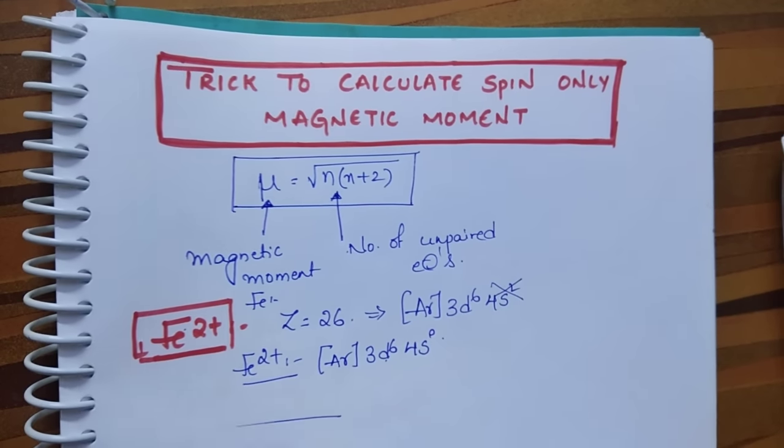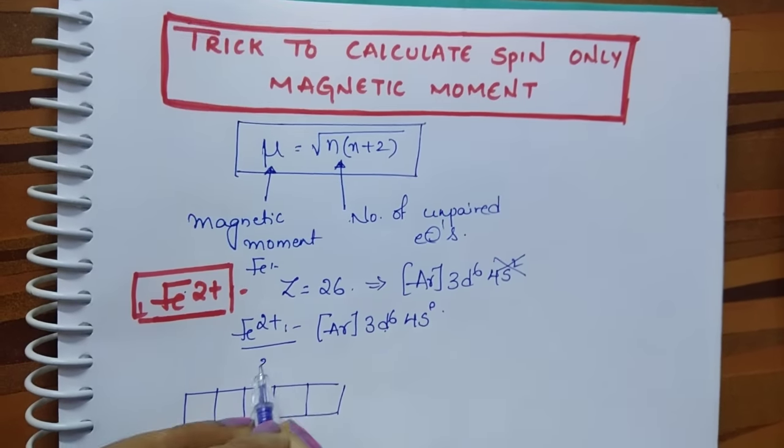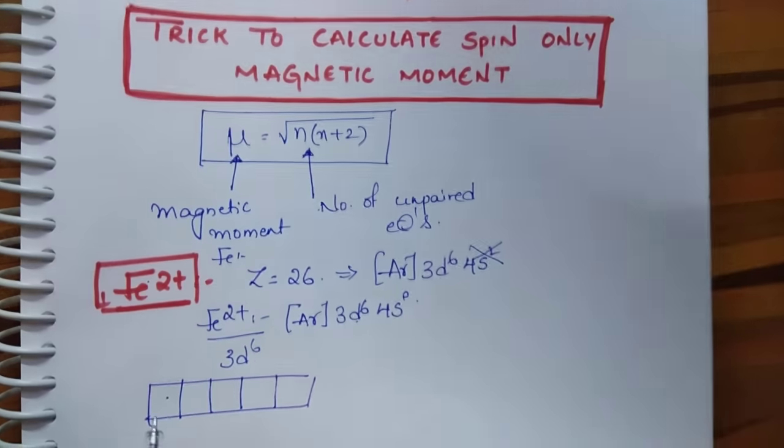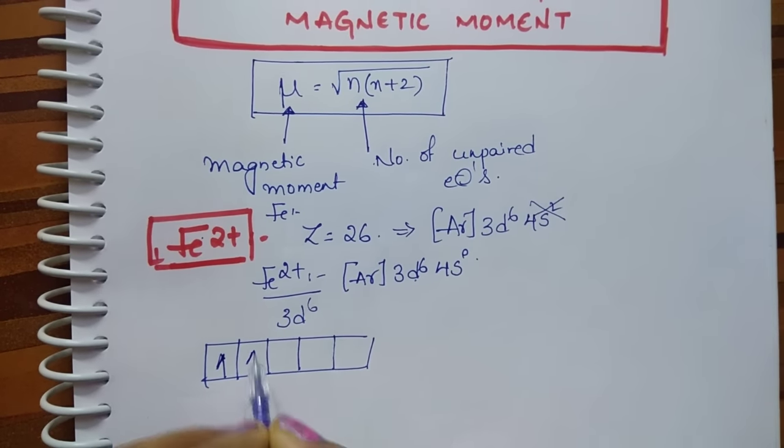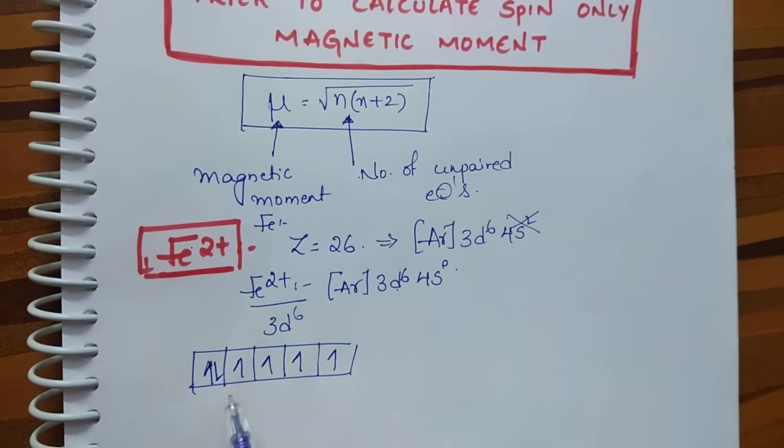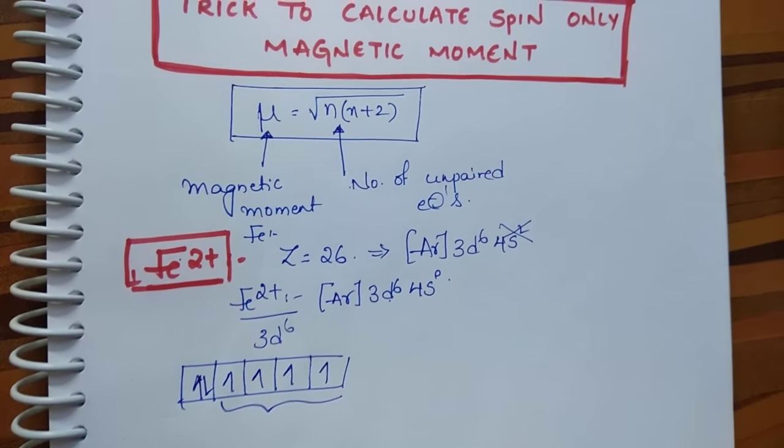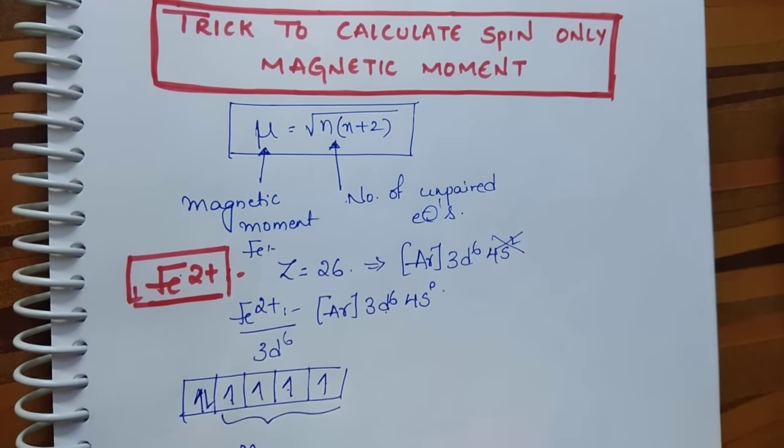Now take this d⁶ orbital. How many electrons are there? 6 electrons are there. Write these 6 electrons. Now how many unpaired electrons are here? 1, 2, 3, 4. So n value is 4.